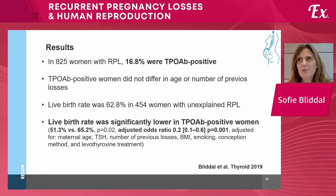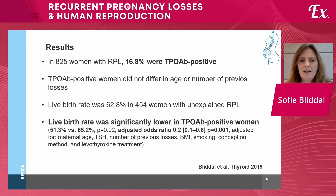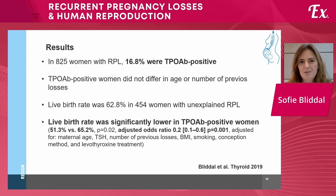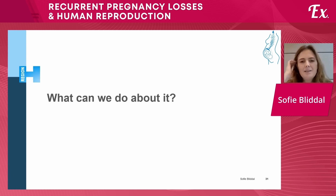The cohort included all women referred to our unit between 2011 and 2017. In 825 women with recurrent pregnancy loss, we found that 16.8% were TPO antibody positive. TPO antibody positive women did not differ in age or number of previous losses. The live birth rate was 62.8% in the 454 women with unexplained recurrent pregnancy loss who achieved pregnancy, and the live birth rate was significantly lower in the TPO antibody positive women — even after adjusting for maternal age, TSH level, number of previous losses, BMI, smoking, conception method, and T4 treatment.